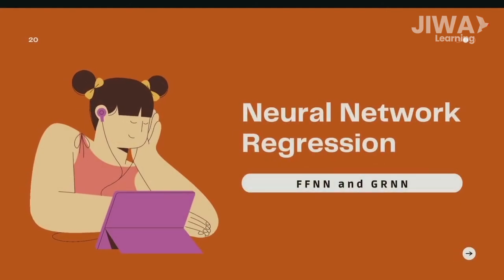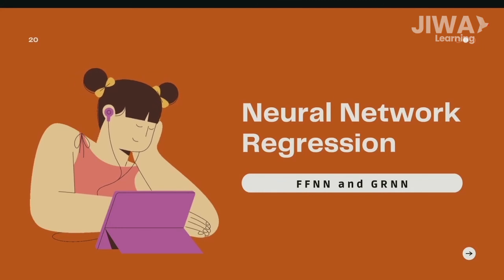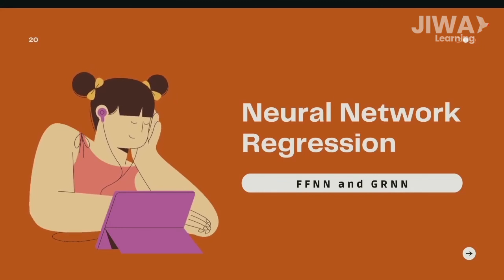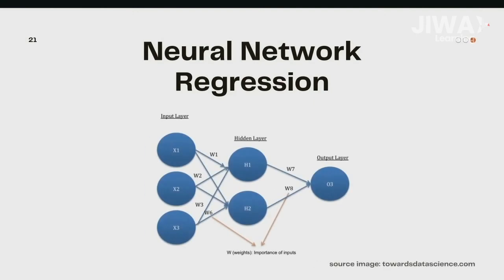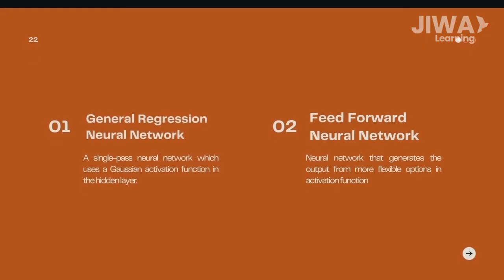A neural network can also be used as a regression algorithm, such as the general regression neural network and the feedforward neural network. A neural network generates the output after the input is passed through the neural network architecture. The general regression neural network is a single-pass neural network that uses a Gaussian activation function in the hidden layer, while the feedforward neural network generates output from more flexible options in activation function.